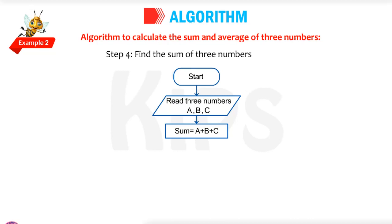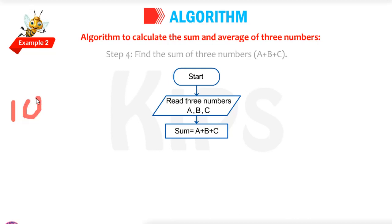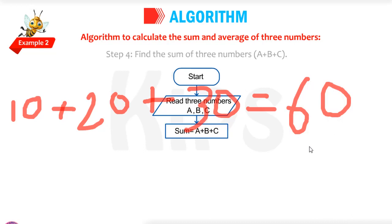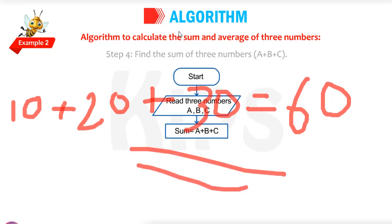Step four: find the sum of three numbers. Sum is equal to A plus B plus C. A is 10, B is 20, C is 30. So 30 plus 20 is 50, plus 10 is 60. The output is 60. But the program is not over — there is one more output to find.